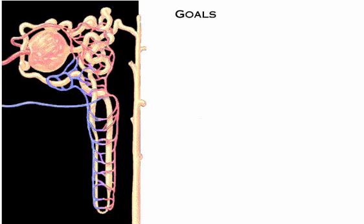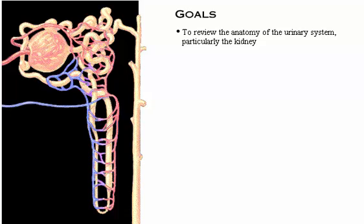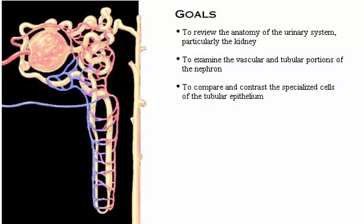Your goals for learning are to review the anatomy of the urinary system, particularly the kidney; to examine the vascular and tubular portions of the nephron; to compare and contrast the specialized cells of the tubular epithelium; and to review the unique structure of the juxtaglomerular apparatus.